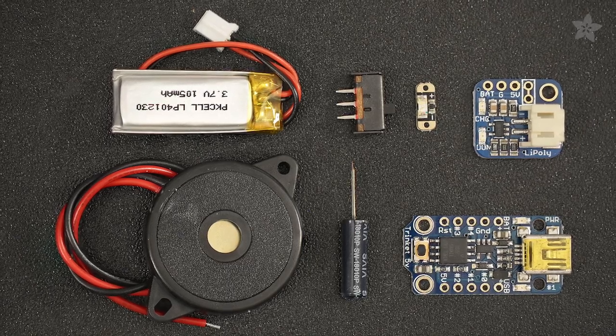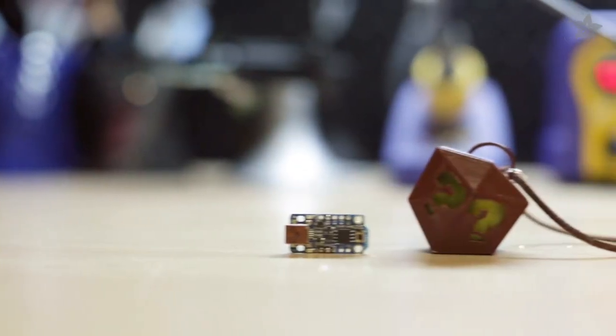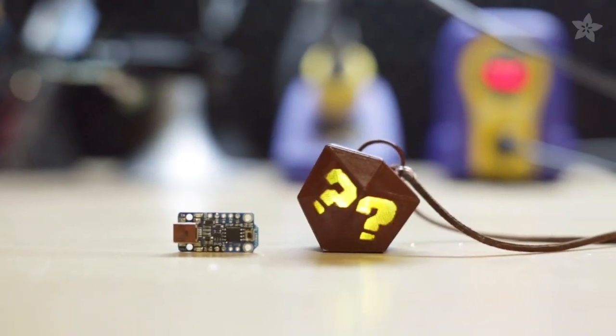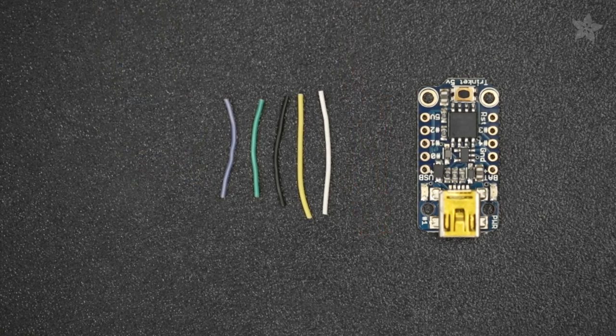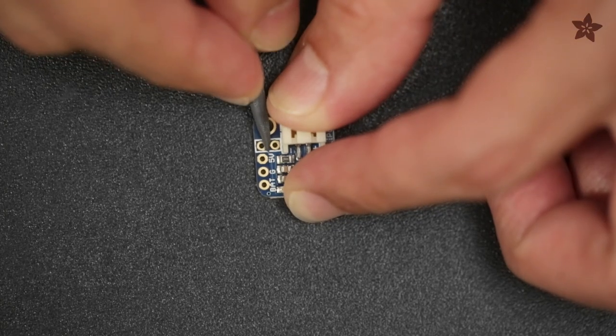You can get the parts to build this project on the shop at Adafruit.com. The Adafruit Trinket Mini is a tiny microcontroller designed for small projects. And combined with the LiPo backpack, you can keep your projects enclosed while being able to recharge the circuit.